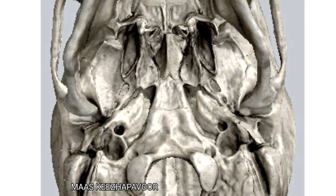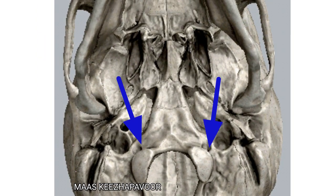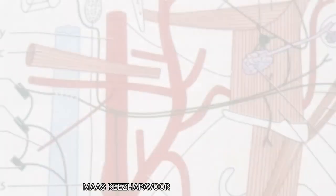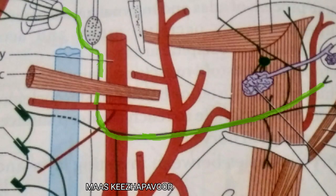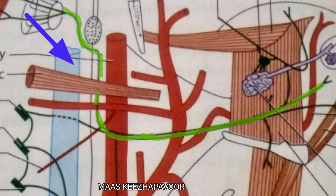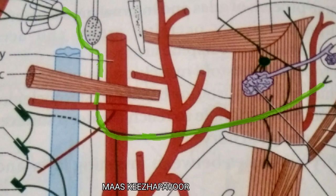The hypoglossal canal lies medial and posterior to the jugular foramen. In its extracranial course, after coming out of the hypoglossal canal, the hypoglossal nerve lies deep to the internal carotid artery, internal jugular vein, and the 9th, 10th and 11th cranial nerves.